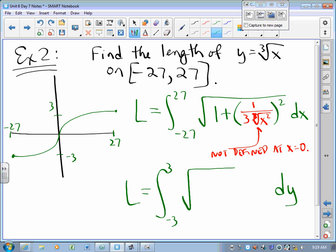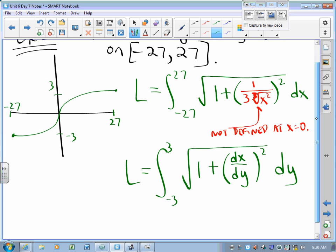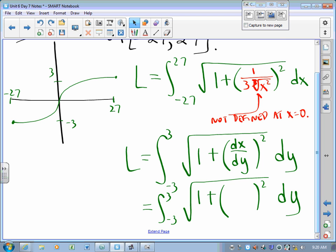But if we do that, we would have to say 1 plus dx dy squared. And the proof is analogous to the original proof we did. You just throw a delta y in and divide by radical delta y squared as opposed to what we did with delta x's. How do we do that? We need to solve for x in terms of y. So if y is the cube root of x, then x is y cubed. And so the derivative of x with respect to y is 3y squared.